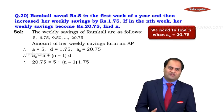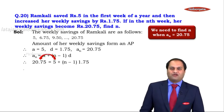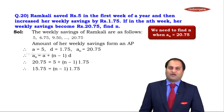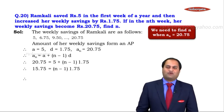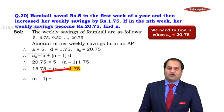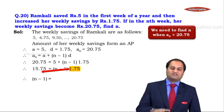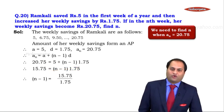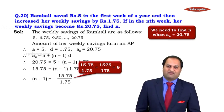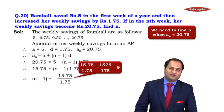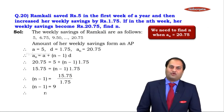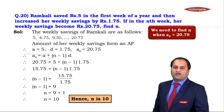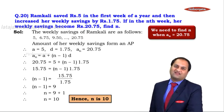We need to take care with the decimal calculations. Rearranging: 20.75 − 5 = (n − 1) × 1.75, giving 15.75 = (n − 1) × 1.75. Dividing both sides: 15.75 / 1.75 = 1575 / 175 = 9. So n − 1 = 9, therefore n = 10. The answer is n = 10.